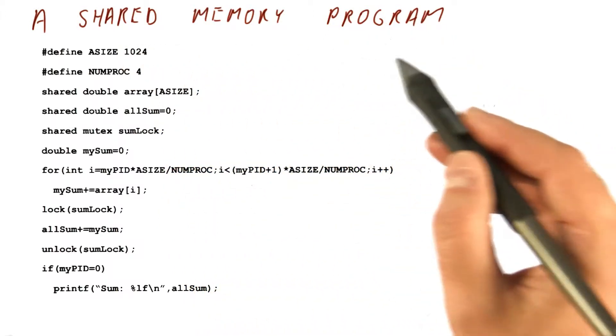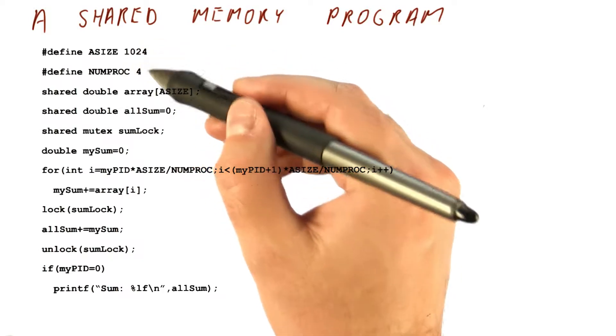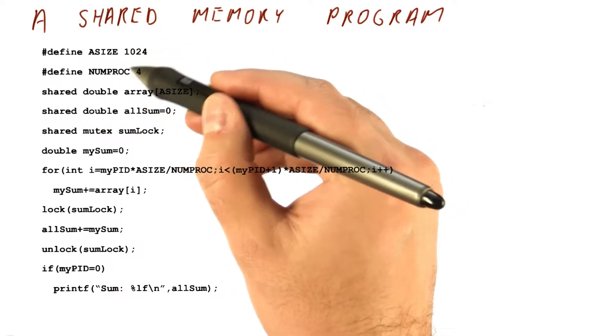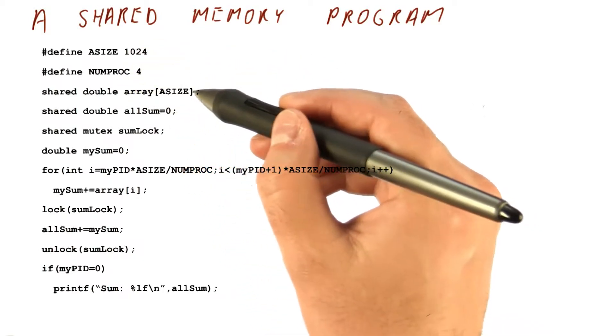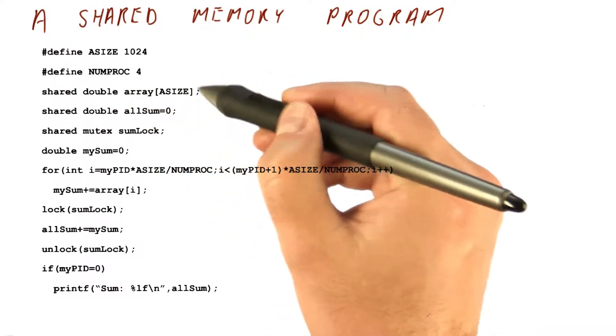Now let's look at the shared memory version of the same program. We still have the same size of the overall array and the same number of processor cores. But this time they can all access the same memory, so we can just put the whole array in memory.